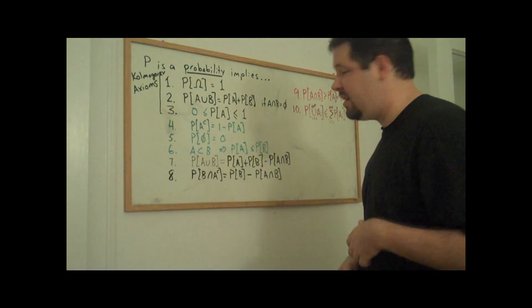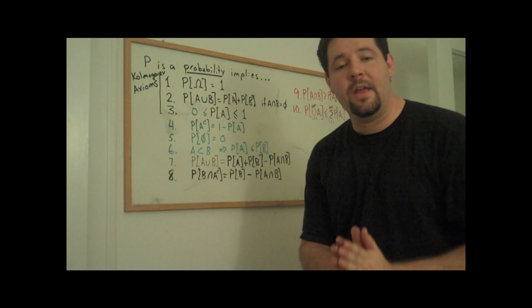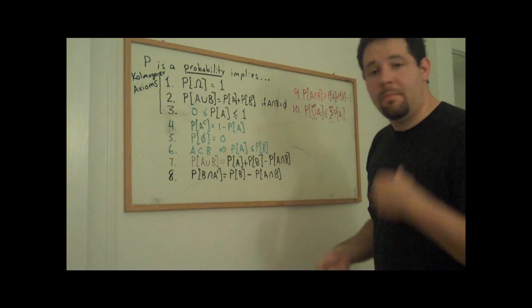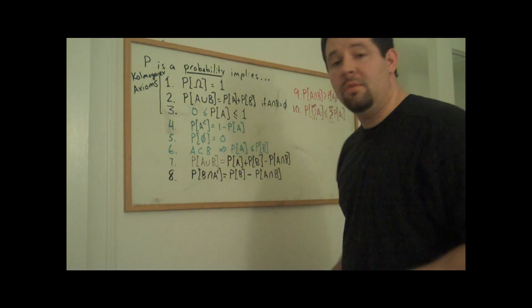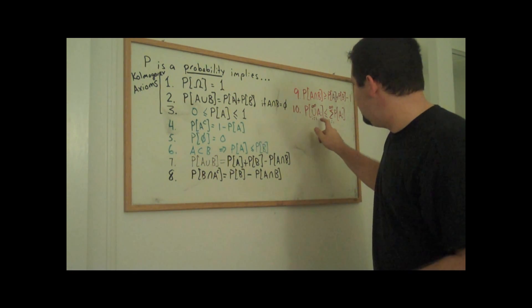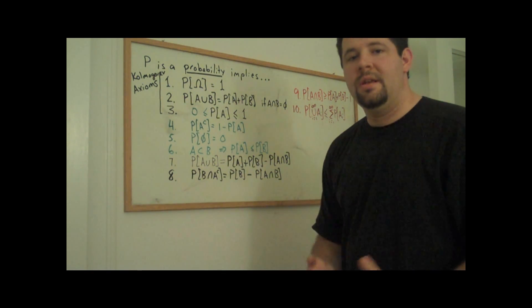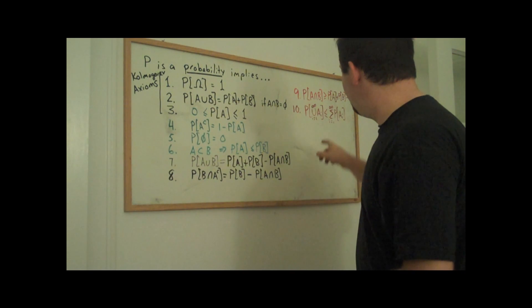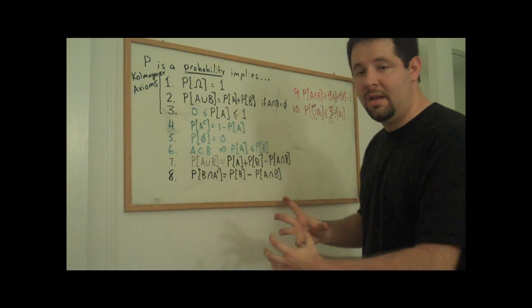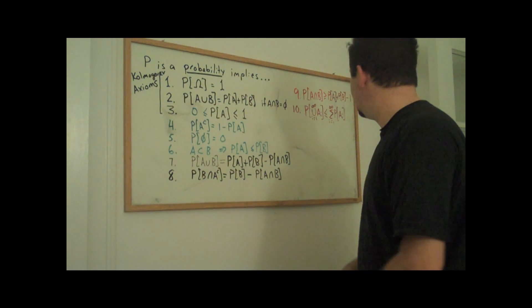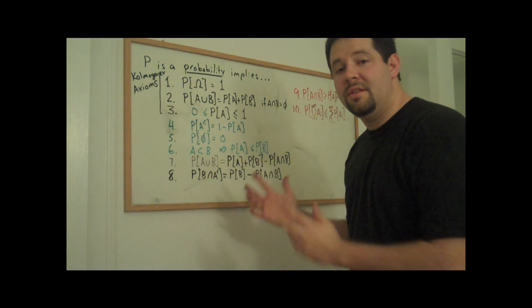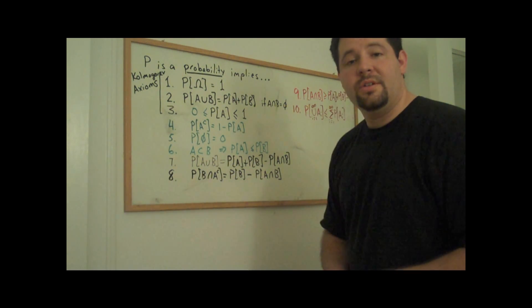But I've written down a couple more inequalities here just because they're useful and famous and you ought to know them if you're going to study probability. This first one here, the probability of A and B has to be bigger than the probability of A plus B minus one. That one's called Bonferroni's Inequality. And number ten here is what is known as Boole's Inequality. If you take any sequence of sets in this Borel set and you take the countably infinite union of these, that probability of that event that's created by that union of those events has to be less than if you just added up the probabilities of each of those events separately.